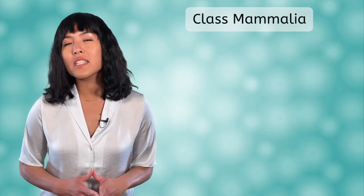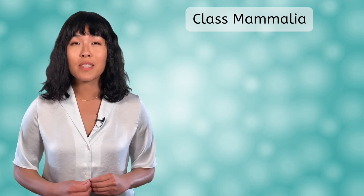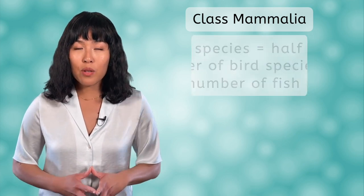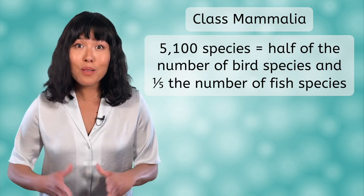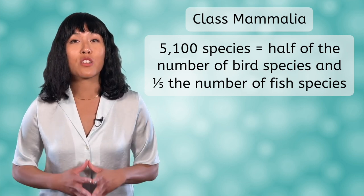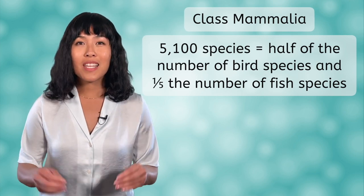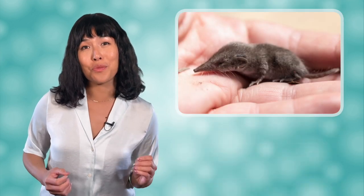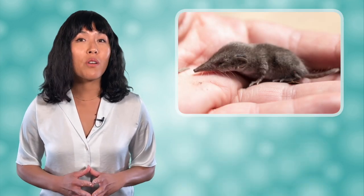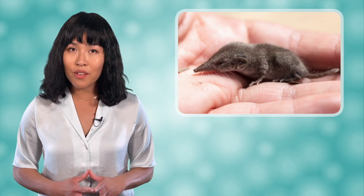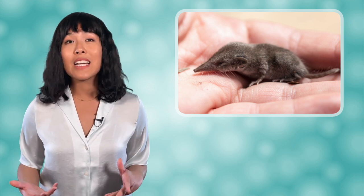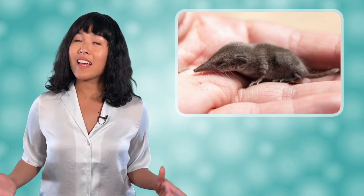Class Mammalia is a relatively small group of organisms in Kingdom Animalia with around 5,100 species. This is about half the number of species of birds and one-fifth the number of fish species. Within this small group, there is a wide range of animals ranging from the massive blue whales and elephants to the teeny tiny shrew mouse. Mammals are also the animals most affected by human activities, including domestication, food, clothing, and hunting.